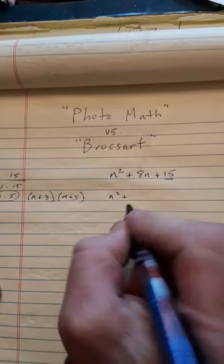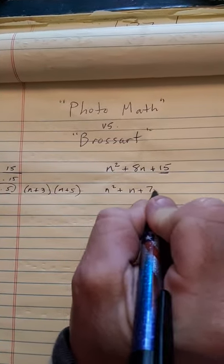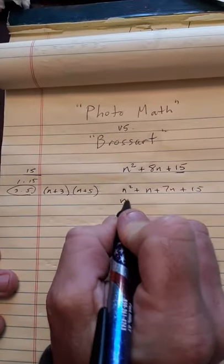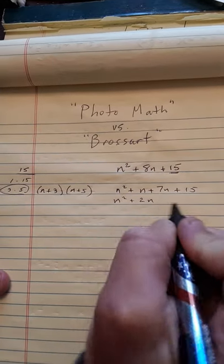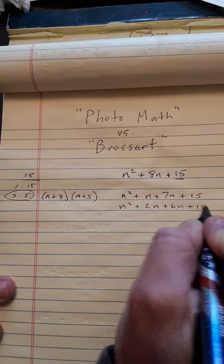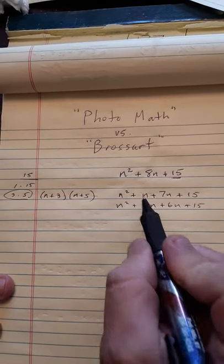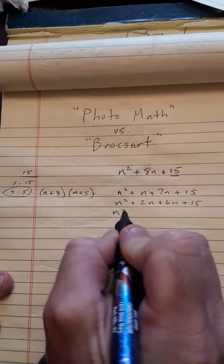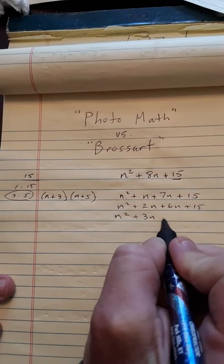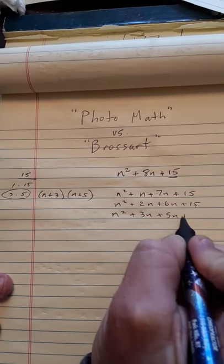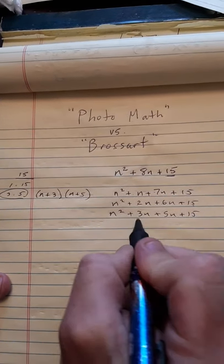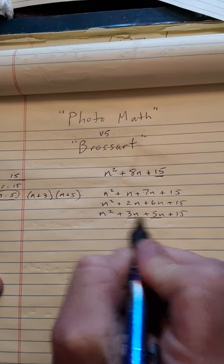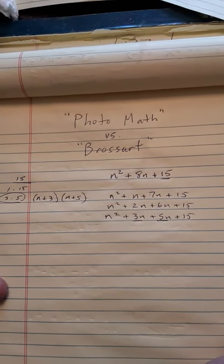So Photo Math is telling you, let's look at n² + n + 7n + 15. And then Photo Math is like, well what about n² + 2n + 6n + 15? 1 times 7 doesn't give you 15, and 2 times 6 doesn't give you 15. Well how about n² + 3n + 5n + 15? Oh we got it, because 3n and 5n add up to 8n, but multiplied 3 times 5 gives you 15.